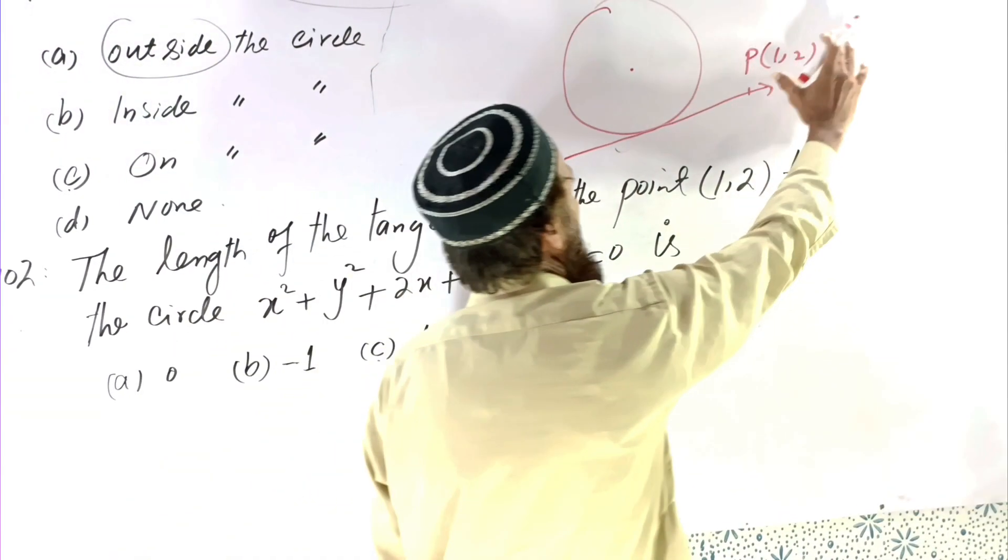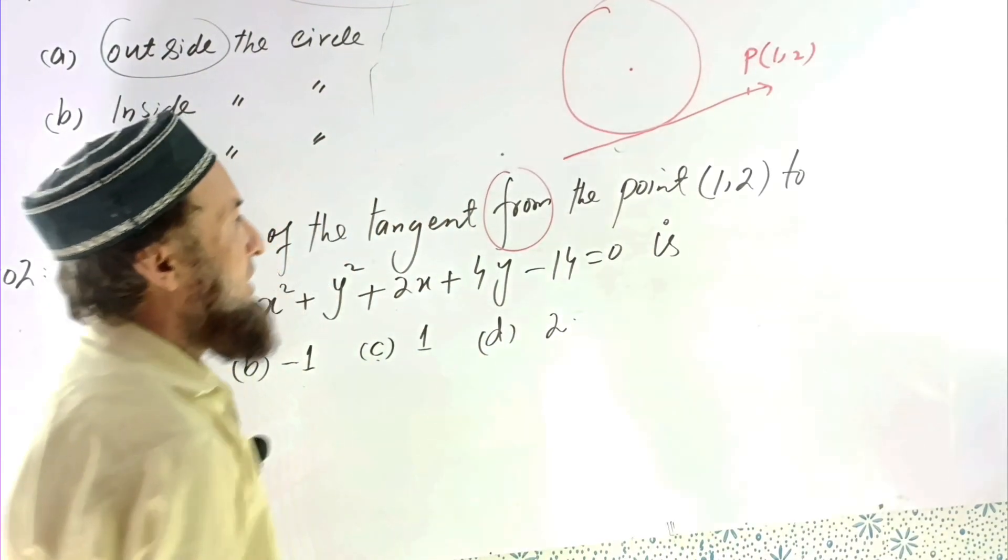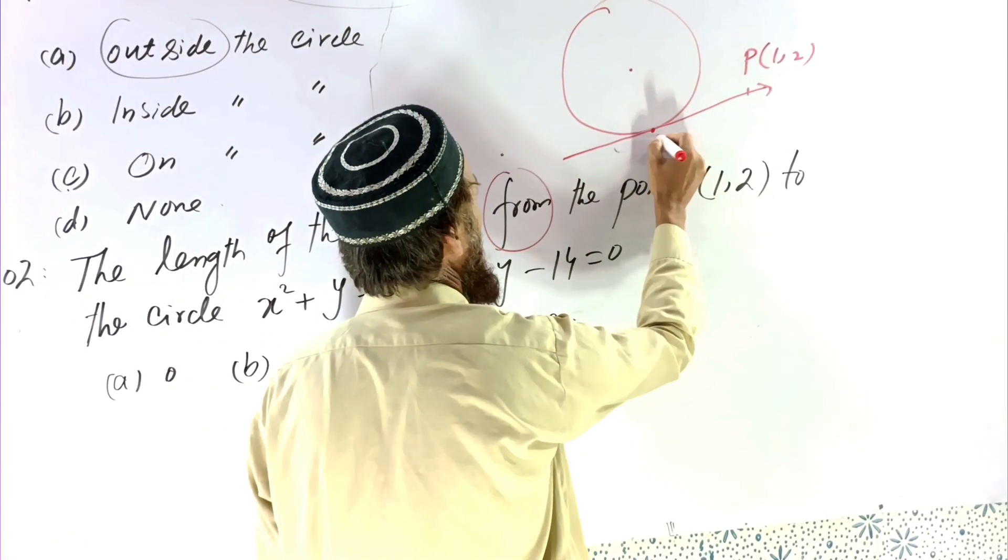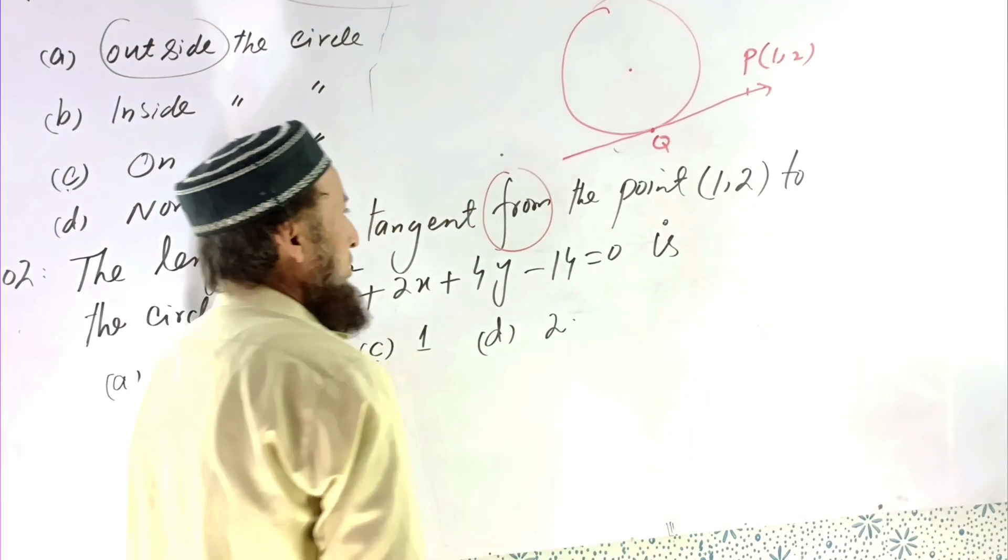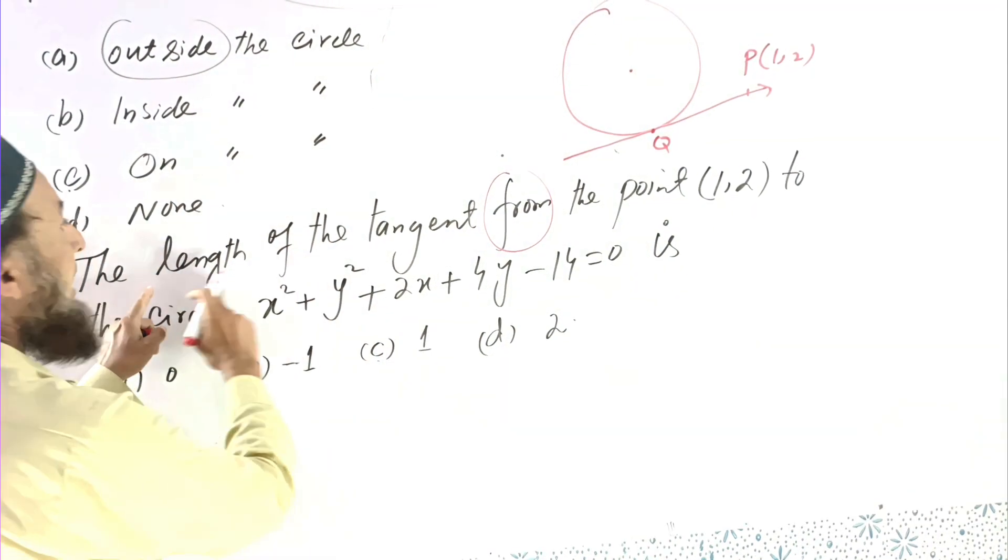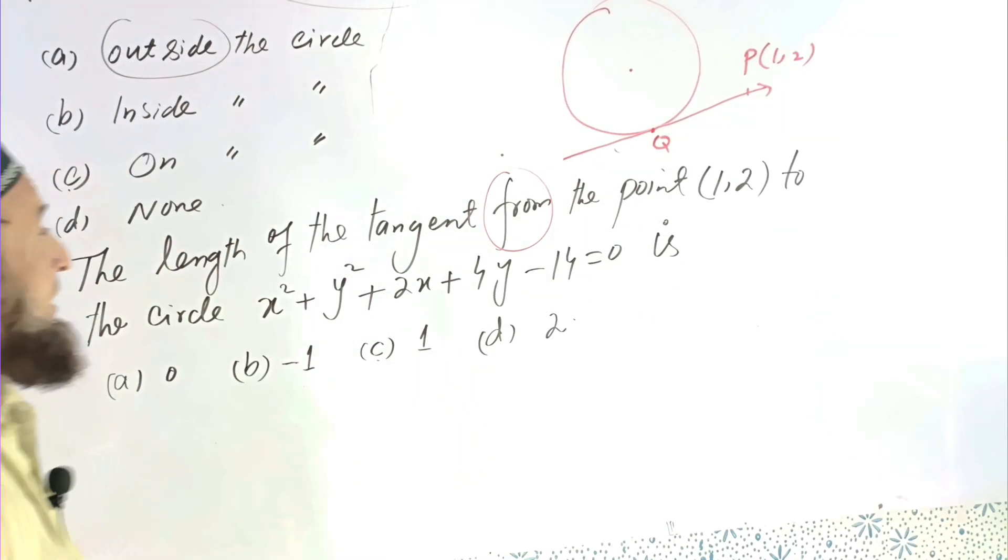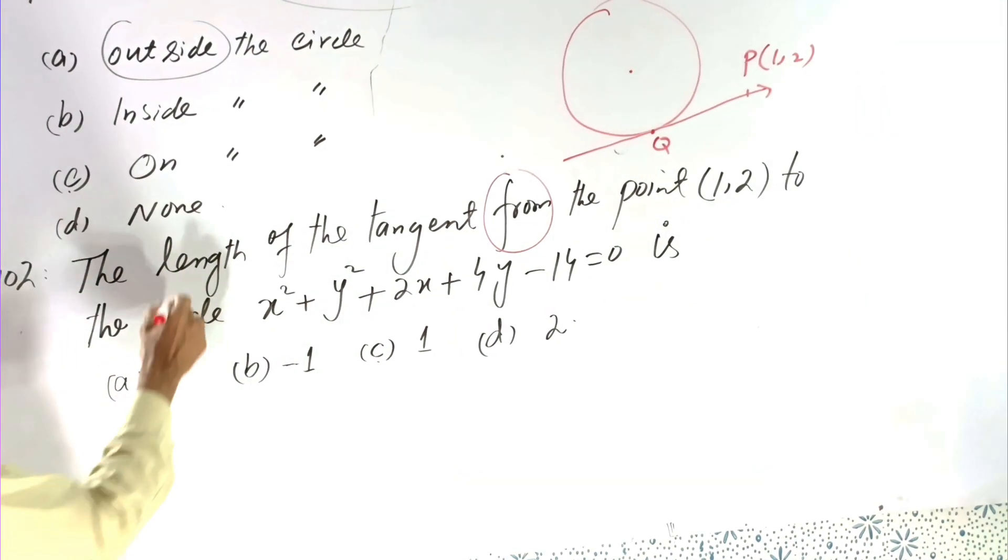So that point, from means that point is outside from the circle, and this is the contact point. So we give the name Q to this point. So from this point, what is the length of the tangent?